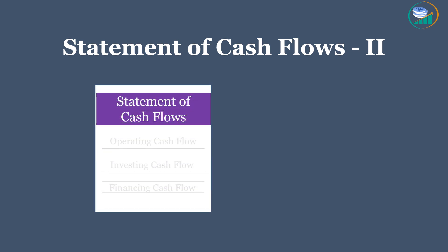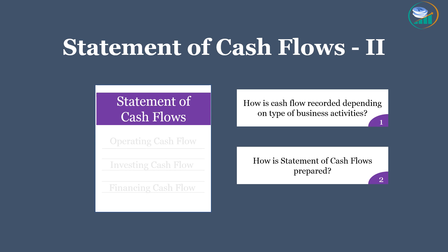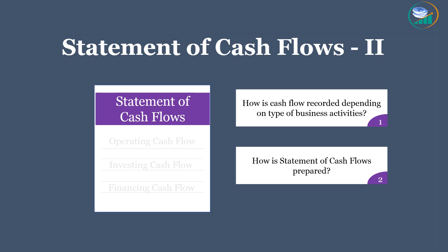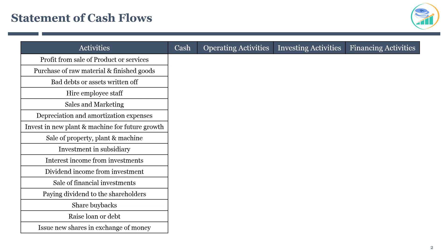In the previous session, I provided an overview of the statement of cash flows. In this session, I will explain how cash flow is recorded depending on the type of business activities, and how the statement of cash flows is prepared. Let's start by understanding different business activities and how these activities are recorded on the cash flow statement.